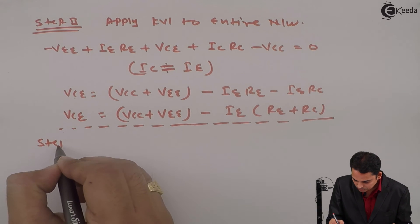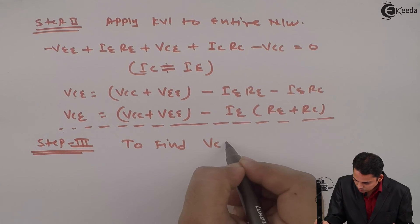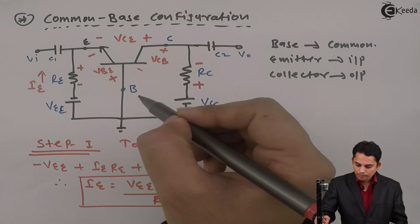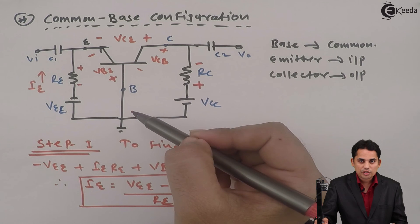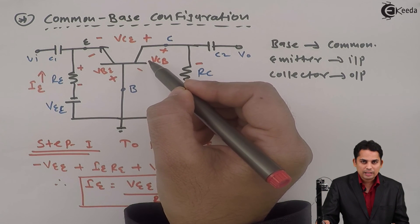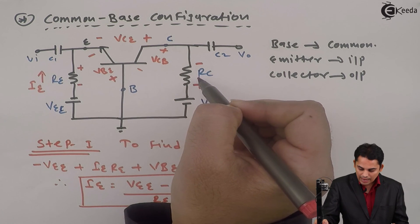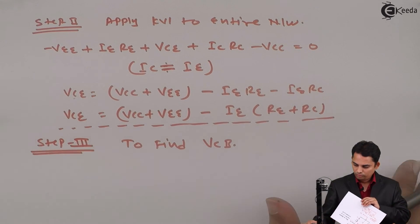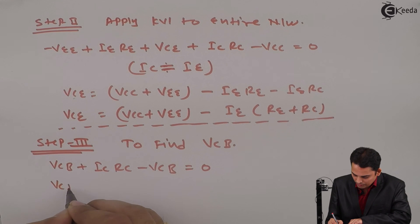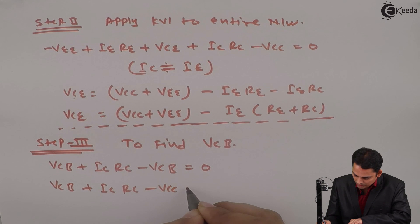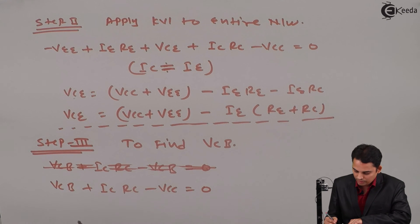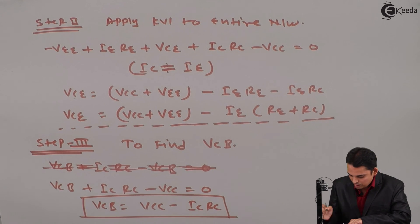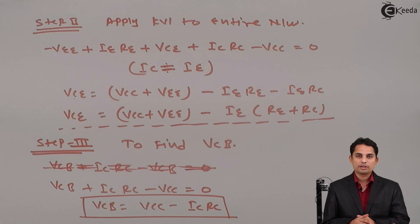Step three is to find VCB, for which we apply KVL to the output loop — the loop between collector and base. Applying KVL gives: VCB plus IC times RC minus VCC equals zero. Hence, VCB is equal to VCC minus IC times RC. This is how we calculate VCB for the given circuit. Thank you.